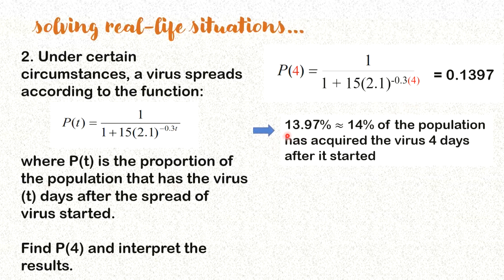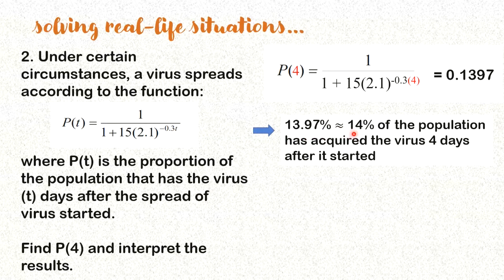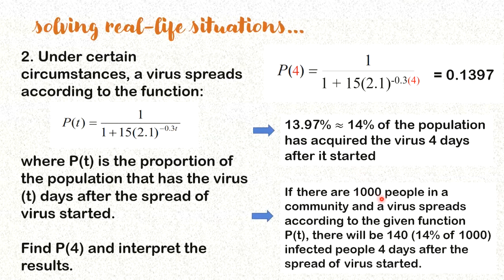It means that 13.97% or approximately 14% of the population has acquired the virus four days after it started. To have a better understanding of this interpretation, let's consider 1,000 people. If there are 1,000 people in a community and a virus spreads according to the given function P(t), there will be 140 infected people—that's 14% of 1,000—four days after the spread of virus started.